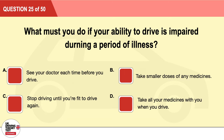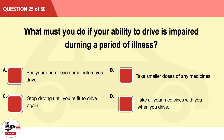Question 25: What must you do if your ability to drive is impaired during a period of illness? A: See your doctor each time before you drive. B: Take smaller doses of any medicines. C: Stop driving until you're fit to drive again. D: Take all your medicines with you when you drive. The correct answer is C: stop driving until you're fit to drive again.